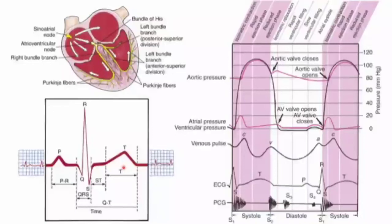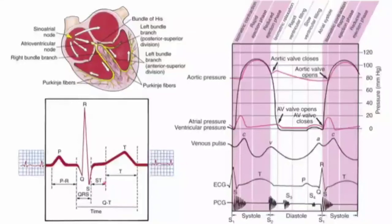The ST segment and T wave signify the return of stimulated ventricular muscle to a resting state, known as ventricular repolarization. The U wave is a small deflection rarely seen just after the T wave, thought to be related to repolarization of the Purkinje fibers; it is commonly seen with bradycardia, electrolyte abnormalities, hypothermia, and hypothyroidism. The QT interval signifies the time elapsed from the onset of ventricular depolarization until the completion of ventricular repolarization, and varies with the cardiac rate.